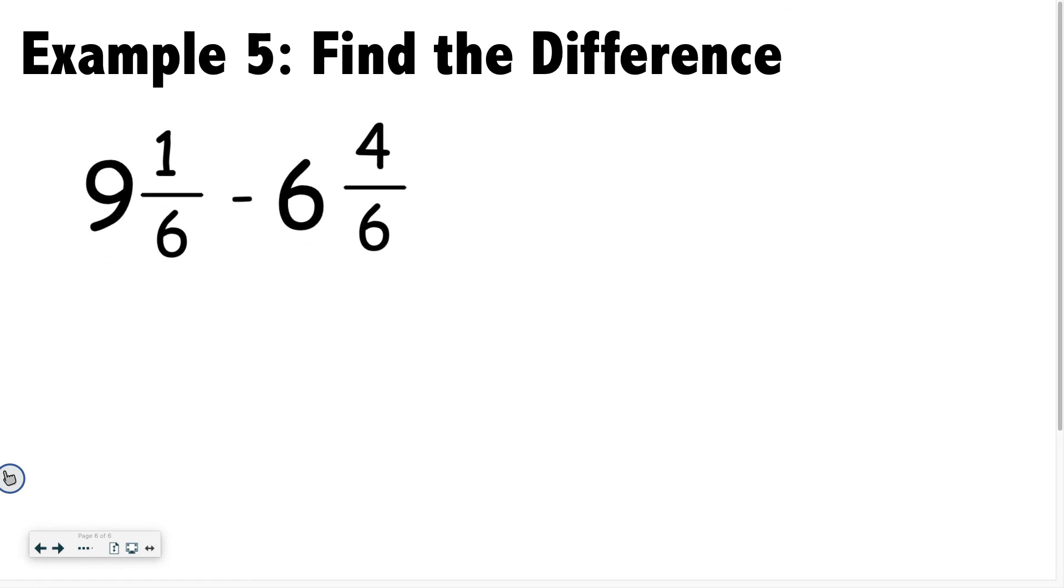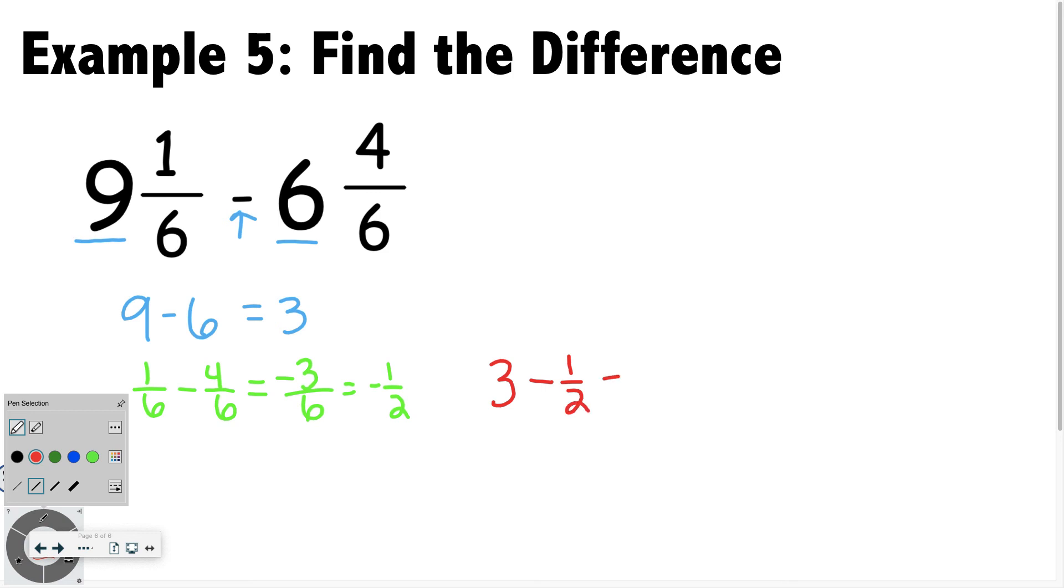We have 9 minus 6. So 9 minus 6 is 3. And then we have 1 sixth minus 4 sixths. 1 minus 4 is negative 3 sixths, or negative 1 half. So now when I combine these numbers, I have 3 minus 1 half, or an answer that is 2 and 1 half.